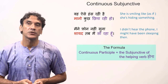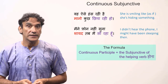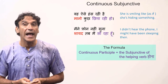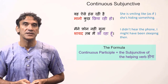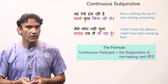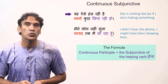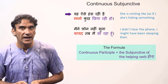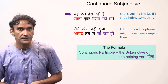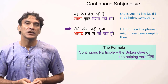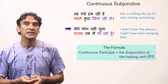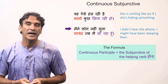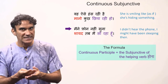Now let's look at the subjunctive continuous. The subjunctive continuous is formed with the continuous participle and the helping verb 'hona' in the subjunctive. Example: 'wo aise hans rahi thi mano kuchh chupa rahi ho' — she was smiling as if she is hiding something. Another example: 'maine phone nahi suna, shayad meh tab so raha hun' — I did not hear the phone; I might have been sleeping then.